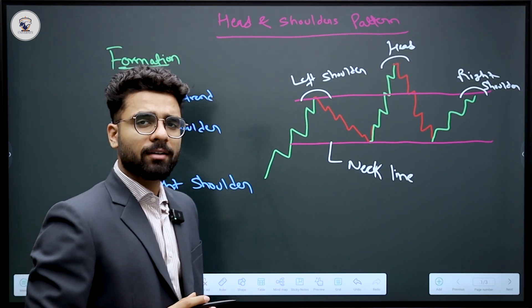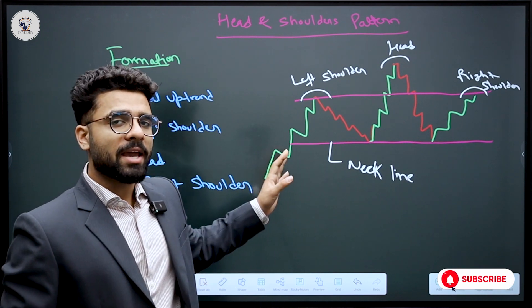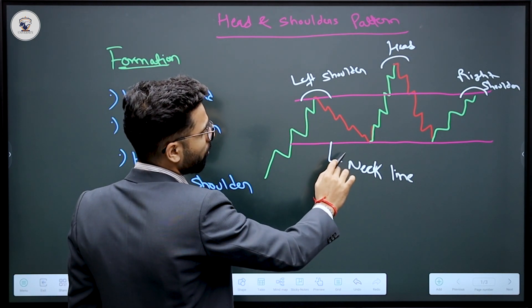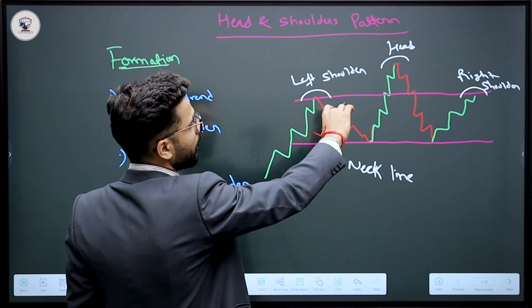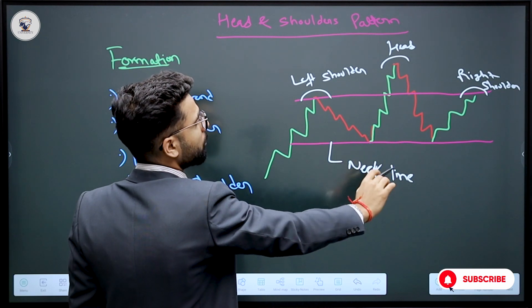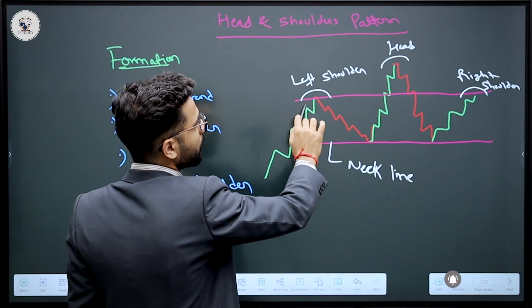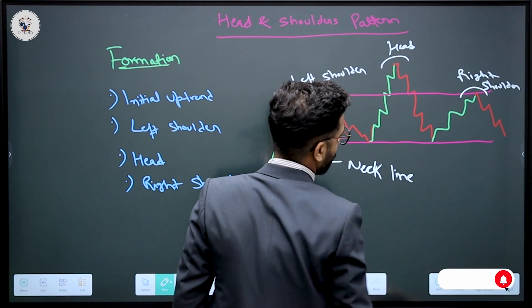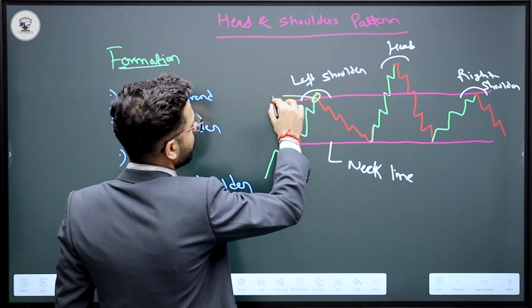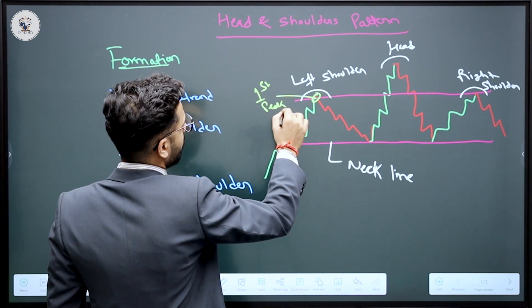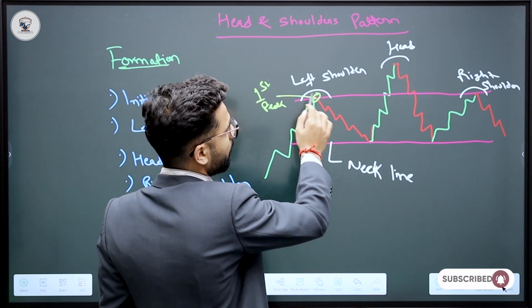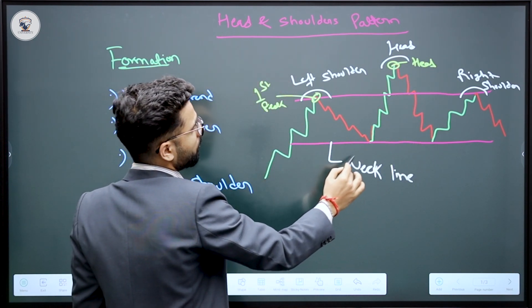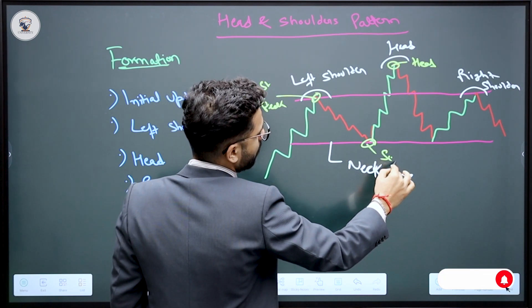Left shoulder, head and right shoulder. So similarly, we get to see this pattern. It's the most important thing. You know that buying is exhausting and the pressure of selling slowly. Because you got to see a retracement in the uptrend. But it didn't sustain. It was selling aggressive. So here your selling will start.